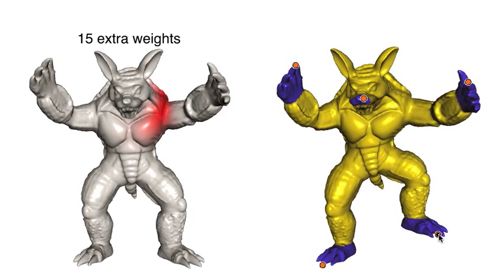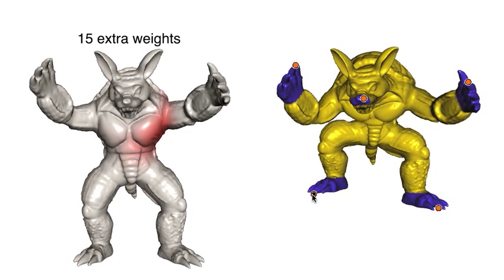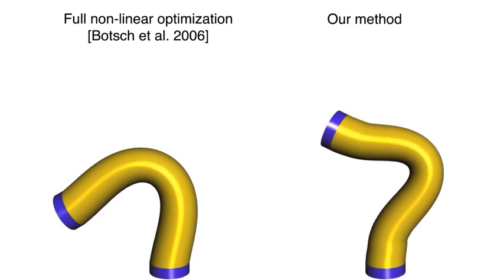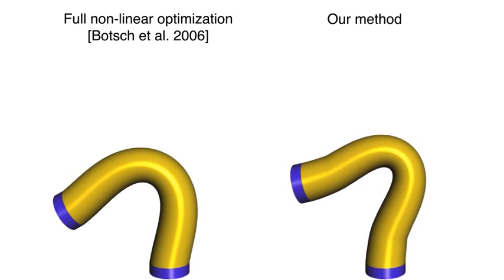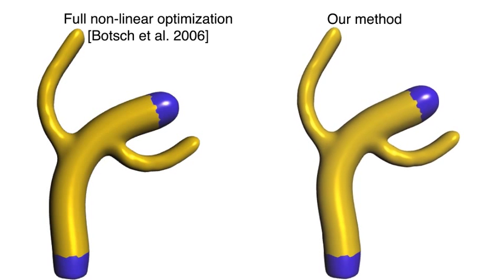To improve the deformation, we introduce abstract handles whose transformations are optimized by our method. The weights for these handles are generated automatically. By combining our fast optimization and our extra handle generation, our framework can also be used for high-quality variational modeling.